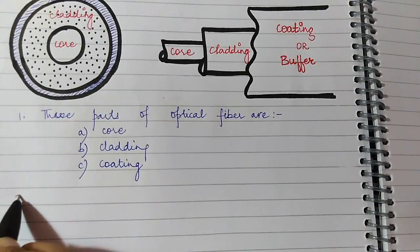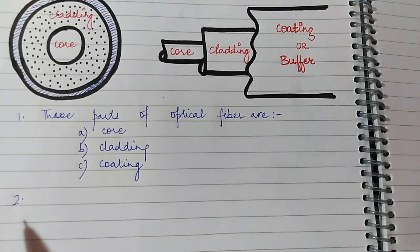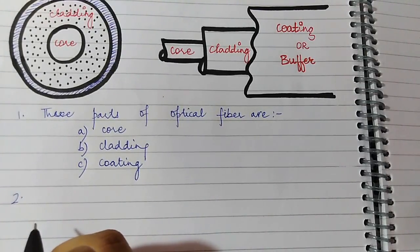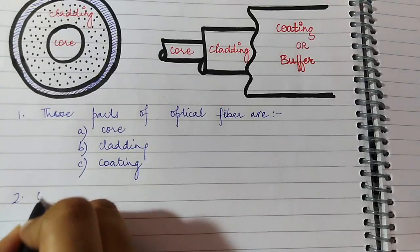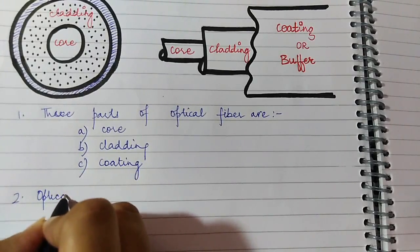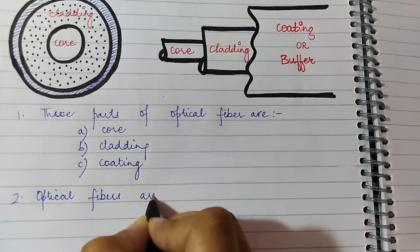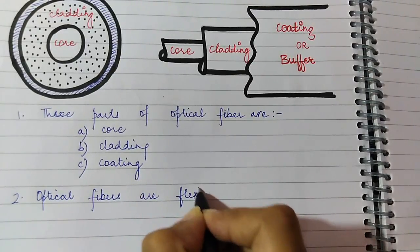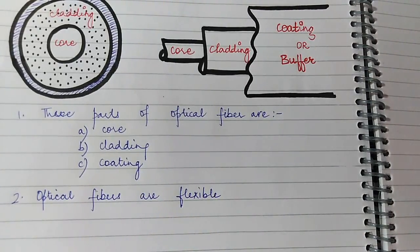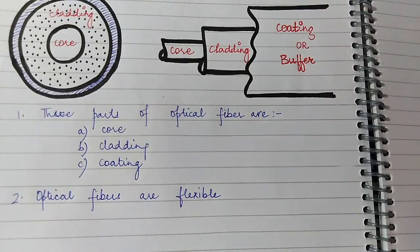The second point is that optical fibers are very flexible. They are basically made up of glass, silica, or plastic.